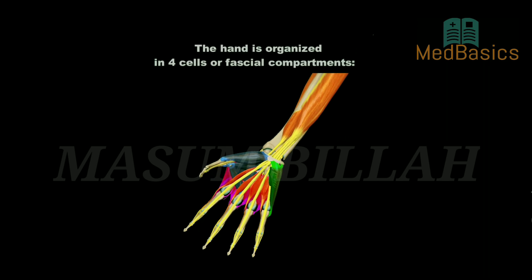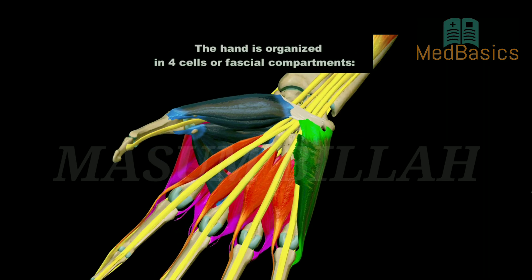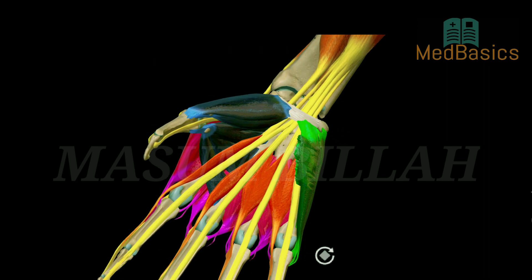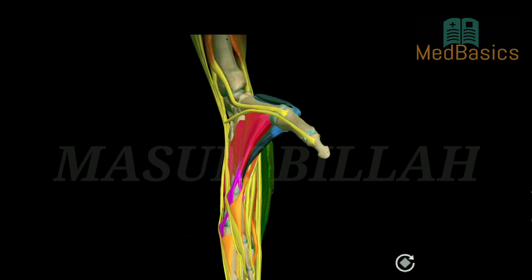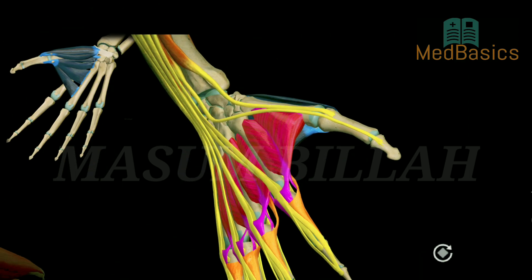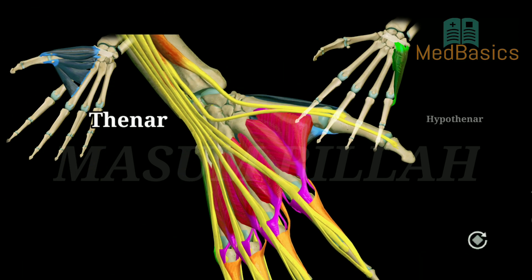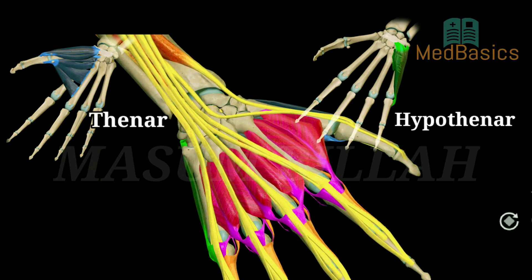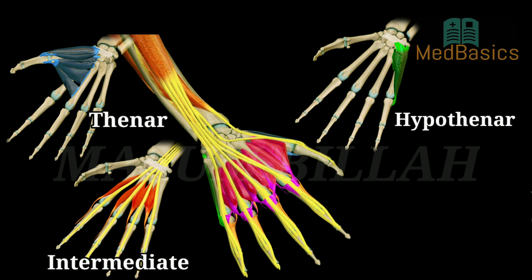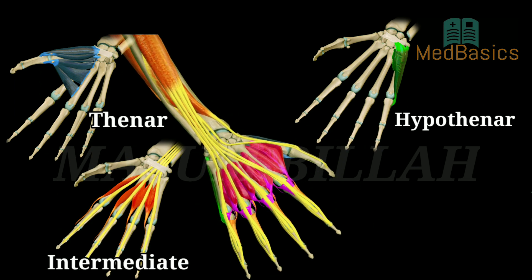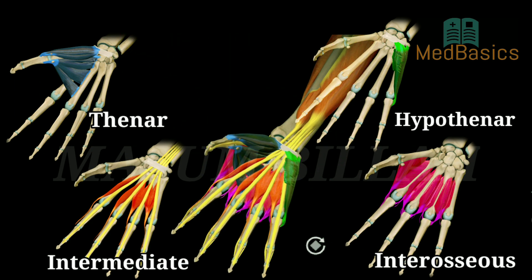The hand is organized in four cells or fascial compartments: the thenar compartment, hypothenar compartment, intermediate fascial compartment, and interosseous compartment.